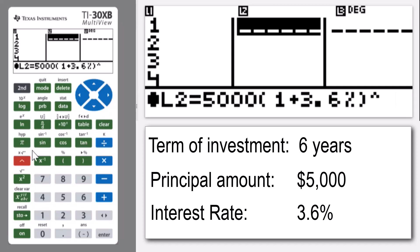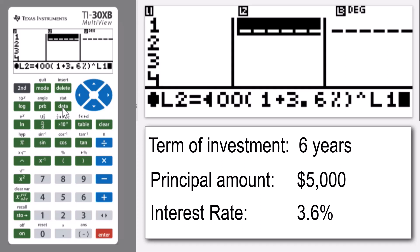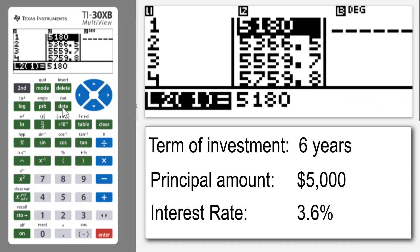To enter the number of years, I click on data and it asks me which list I'd like to use. All of my years are in list one, so I choose list one and press enter. I then press enter again and it fills down.